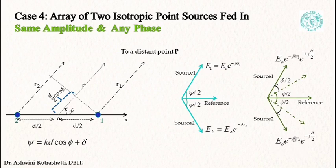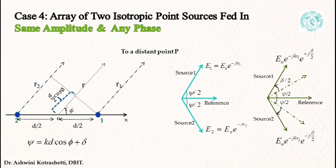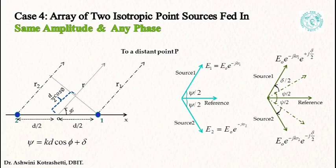Remember, r1 and r2 are the phase terms and they can be substituted by the far field approximations, where r1 is equal to r minus d/2 cos(phi) and r2 is r plus d/2 cos(phi).